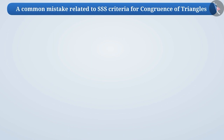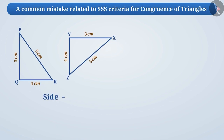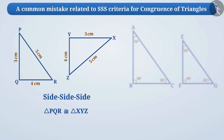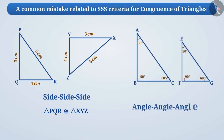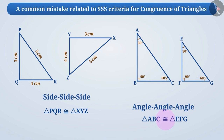Now, let's understand the common mistakes children make. When students learn that two triangles can be congruent by the side-side-side criterion, they wrongly begin to believe that two triangles can also be congruent with the angle-angle-angle criterion. This misconception is termed as the AAA criterion.